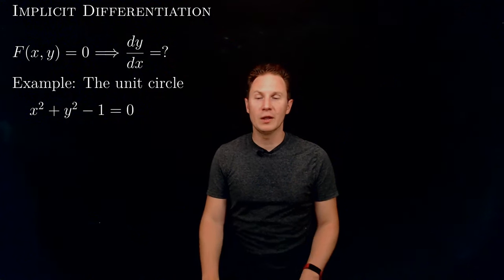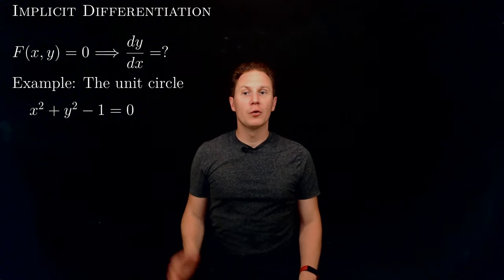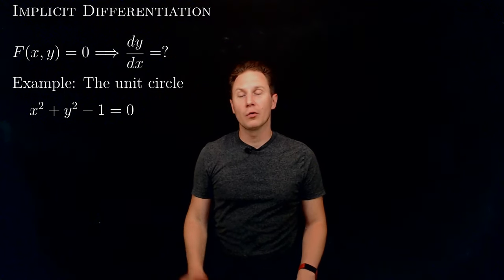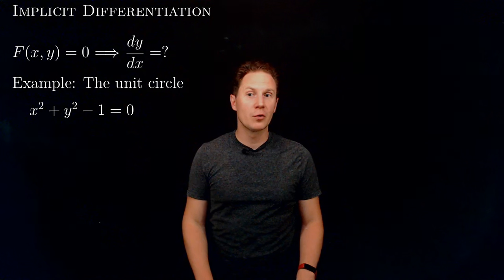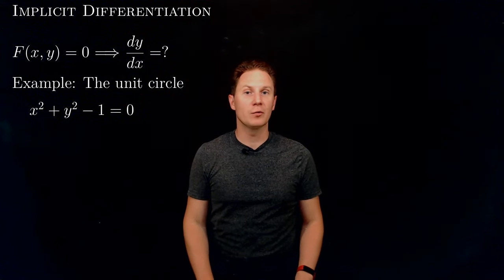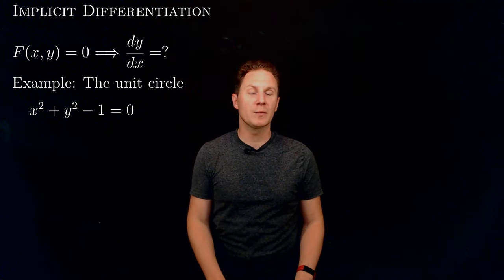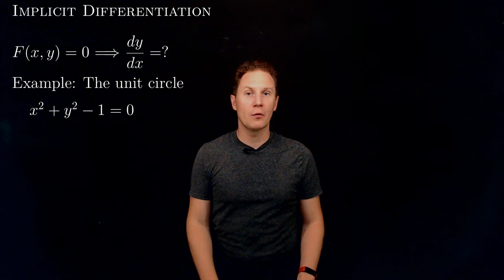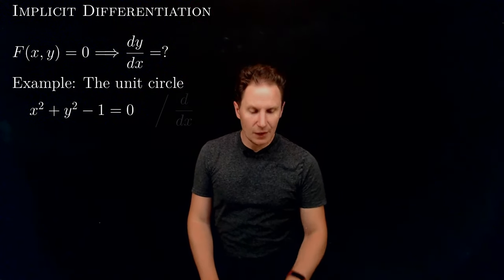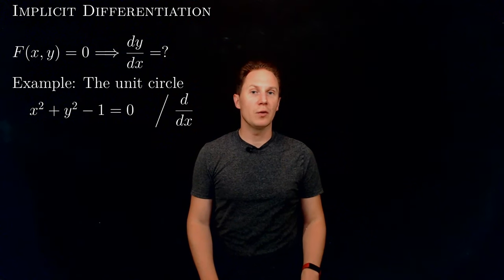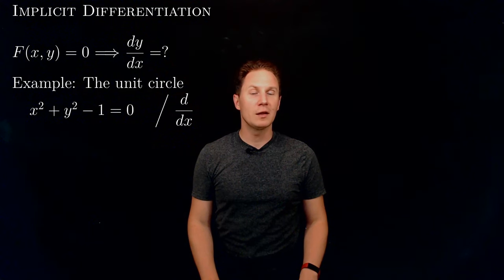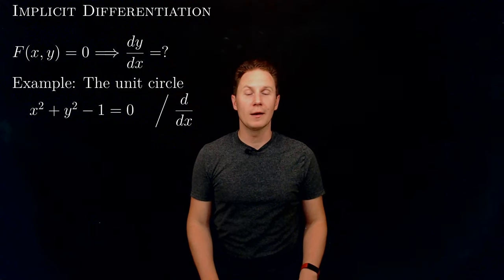Perhaps you thought about solving the equation for y to express it as a function of x — so it would be plus or minus the square root of 1 minus x squared — and then differentiating that function with respect to x to get the derivative of y with respect to x. That's a perfectly valid way, but now I would rather have you differentiate both sides with respect to x of this equation and then equate the derivatives.